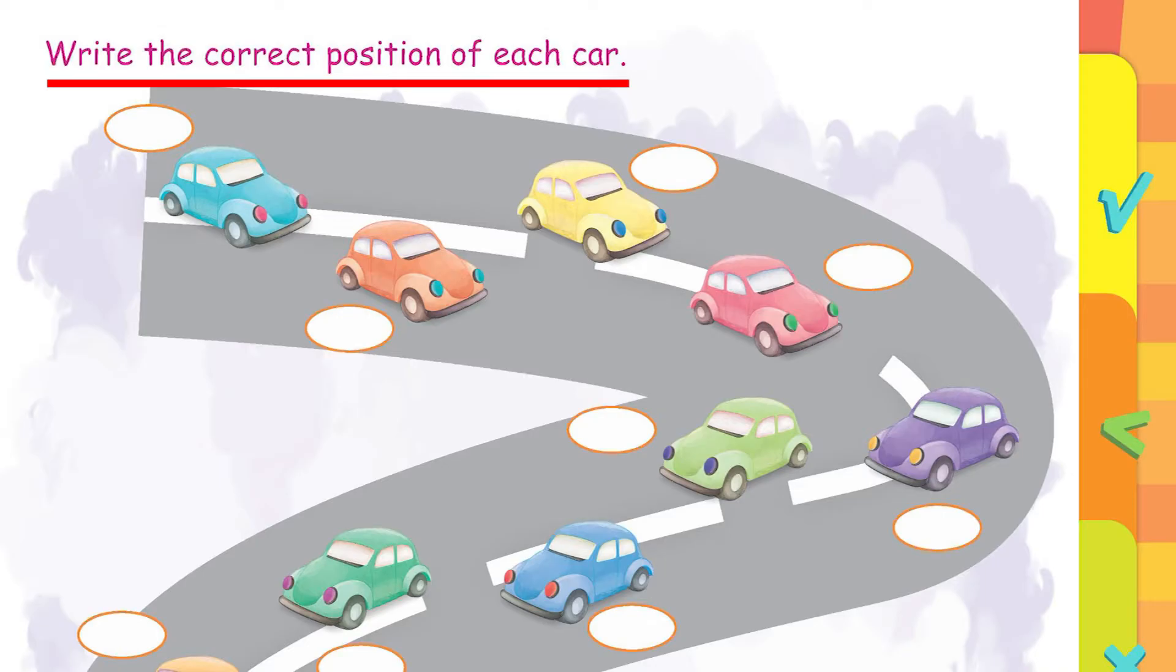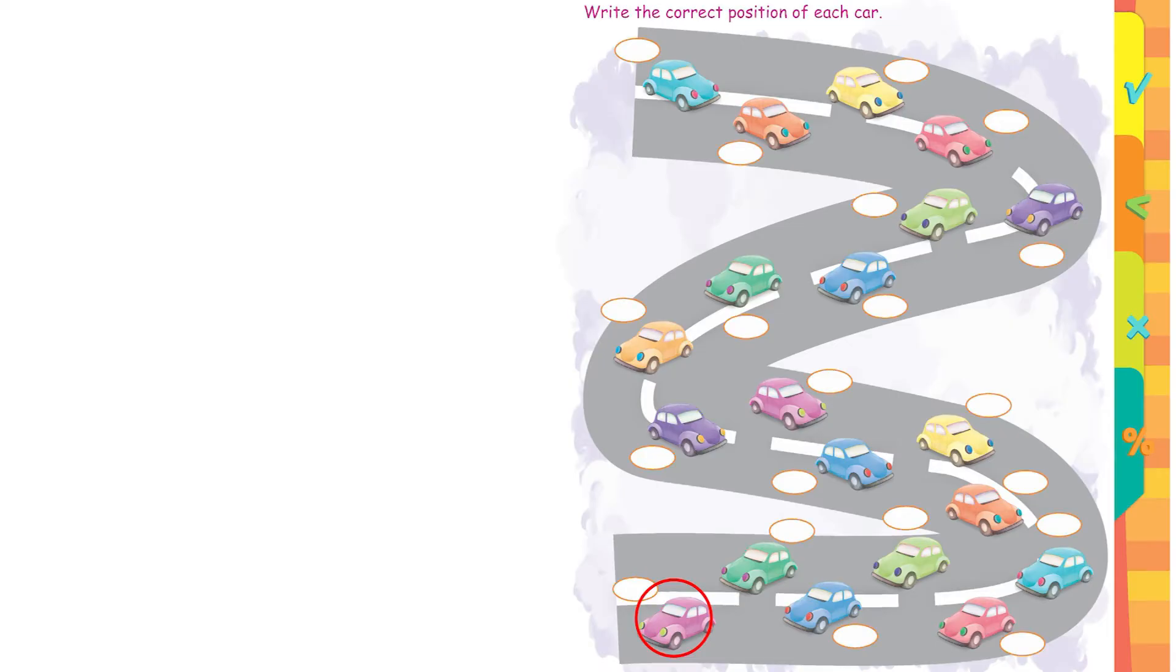Similarly, let's move on to page 3. Write the correct position of each car. Now starting from the bottom because the faces of the cars are at your left side. So we will start from there, 1st, 2nd, 3rd and so on and the last car that is of blue color is at the 20th position. Now write the positions in numbers. You have to learn these numbers and their spelling by heart.